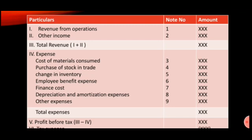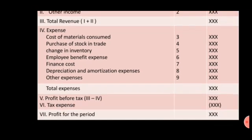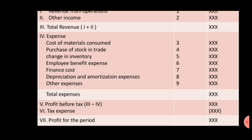Other expenses — Note number 9. Then total expenses are calculated. Roman numeral V: Profit before taxes, calculated as total revenue minus total expenses.